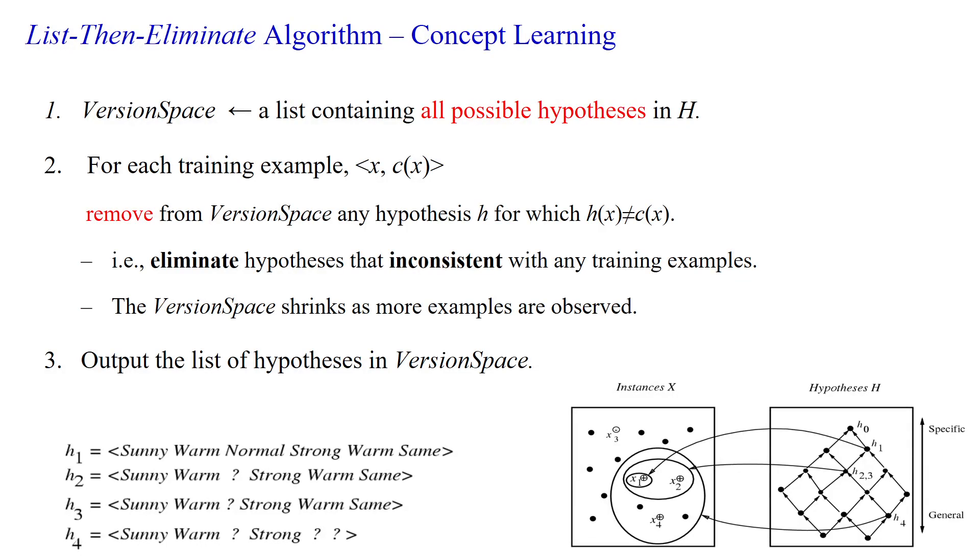Hello everyone, here we will see the List-Then-Eliminate algorithm for concept learning. The version space is a list containing all possible hypotheses in the given hypothesis space H.